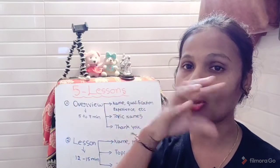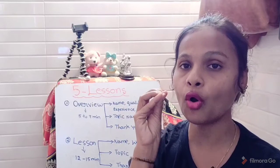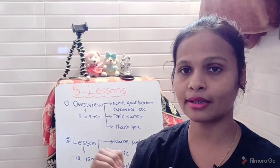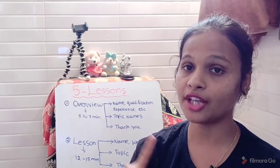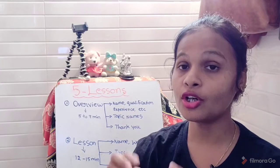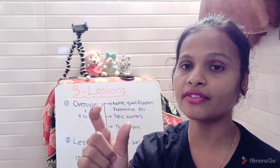Not briefly, just in a simple way you have to explain in that overview. For example, what comes under this number system? Complex numbers, rational numbers, even numbers, odd numbers. So these all numbers will come. So you just have to add the content names only in that overview video.